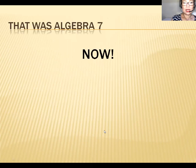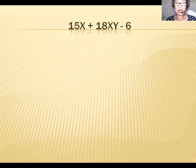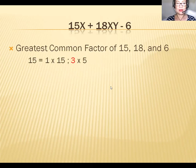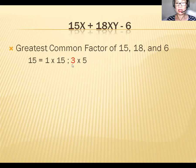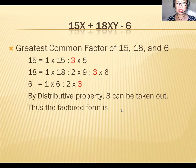Now, factoring the greatest common monomial factor. For example, we have 15x + 18xy − 6. You have to look for the greatest common factor of 15, 18, and 6. The factors of 15 are 1×15 and 3×5; of 18: 1×18, 2×9, and 3×6; of 6: 1×6 and 2×3. The greatest common factor is 3.